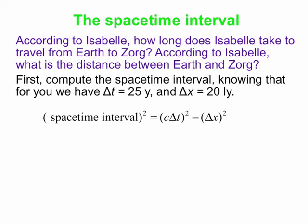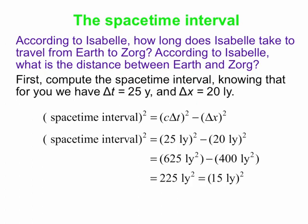We'll use the space-time interval equation. Working out the space-time interval based on your numbers: c·Δt = 25 light years (since c is one light year per year and Δt = 25 years), and Δx = 20 light years. So s² = (25)² − (20)² = 625 − 400 = 225 light years squared. Taking the square root gives s = 15 light years. The space-time interval comes out to be 15 light years.